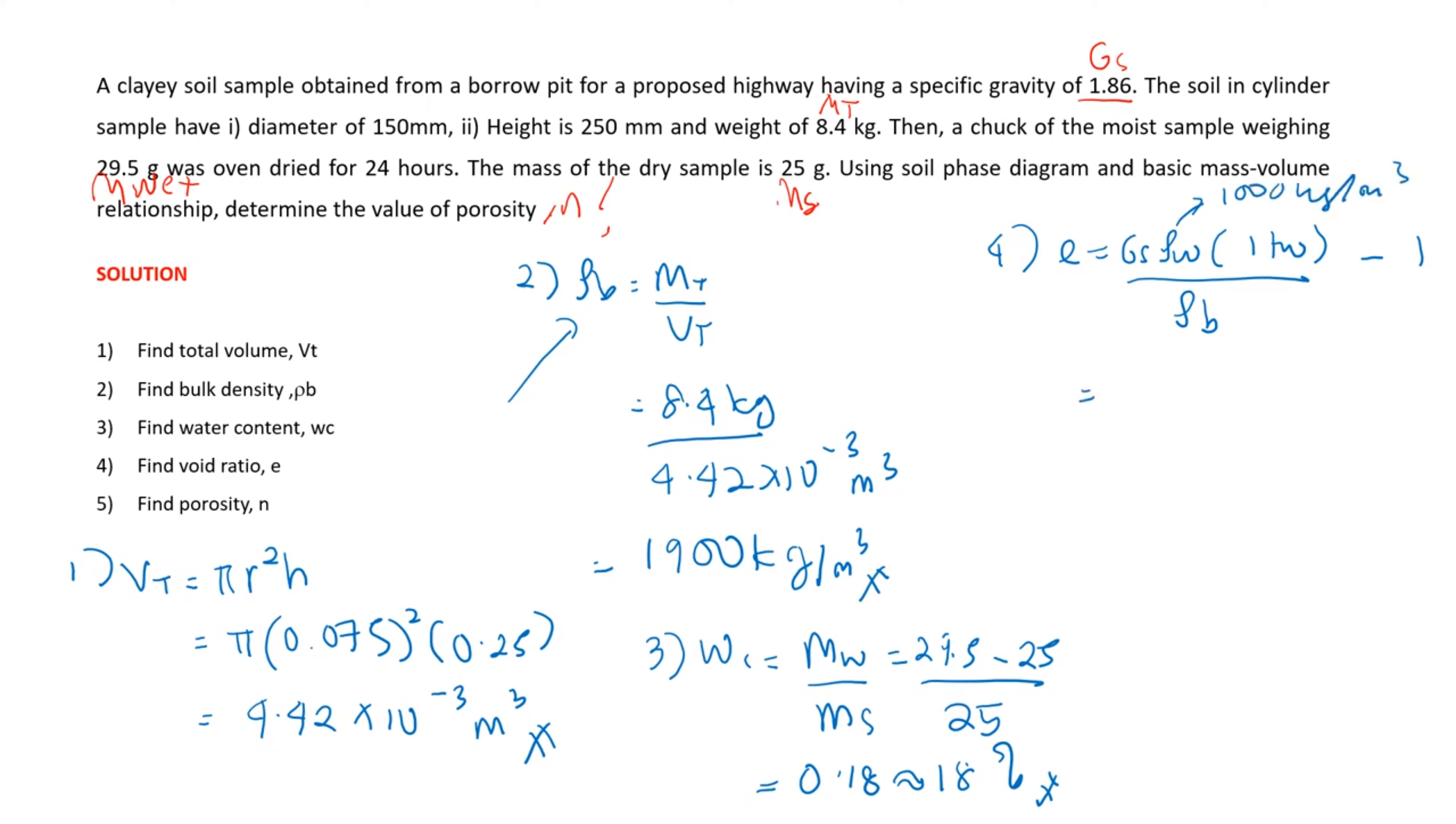So you take the specific gravity already given, 1.86, times 1000, times 1 plus 0.18, divided by the bulk density calculated previously, which equals 1,900, and minus 1. So you get the void ratio of about 0.155.